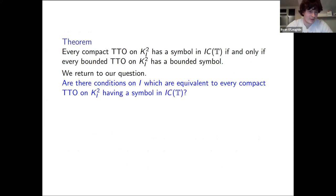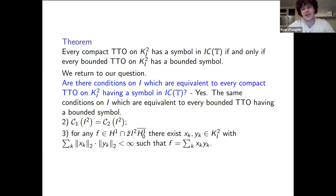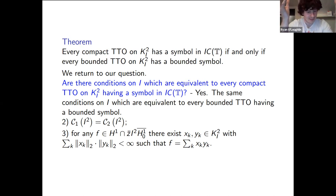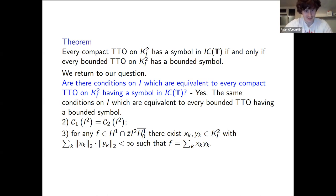With that theorem, we return to the question: are there conditions on I equivalent to every compact TTO having a symbol in I·C(T)? The answer is yes — and by this theorem, these must be the same conditions equivalent to every bounded TTO having a bounded symbol: the embedding-type condition two and the factorisation condition three seen previously. This was achieved purely through duality, by taking adjoints of the map S, showing these two problems are equivalent.